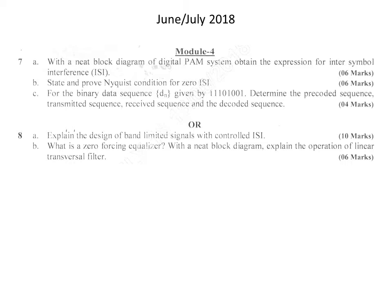The next question is a problem: for the binary data sequence DN given by 1 1 1 0 1 0 0 1, determine the pre-coded sequence, transmitted sequence, received sequence, and decoded sequence. The pre-coded sequence is obtained by the equation PM = DM (modulo-2 subtraction) with PM−1, and the transmitted sequence is obtained by the equation 2PM−1 + 2PM−1.